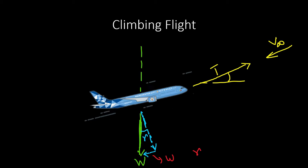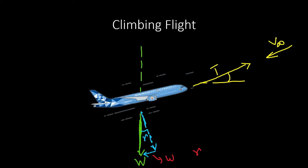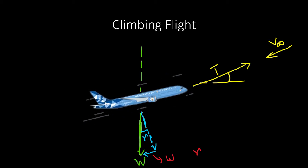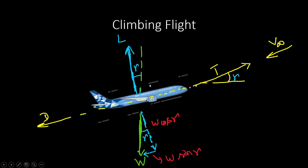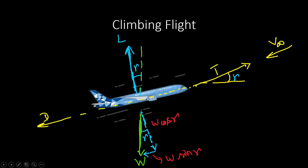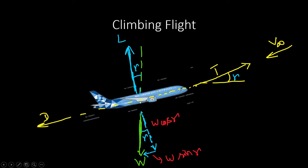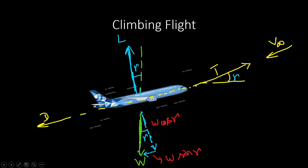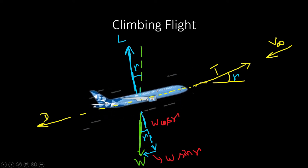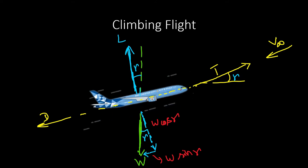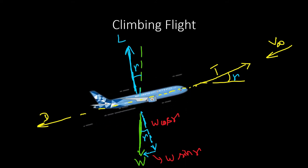Let us consider an aircraft which is climbing at some flight path angle gamma. Thrust is acting parallel to the flight path, drag is acting opposite to the flight path, lift is acting perpendicular to the flight path, and weight is acting vertically downwards. Weight can be broken into two components parallel and perpendicular to the flight path.